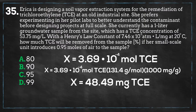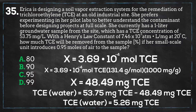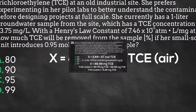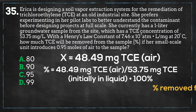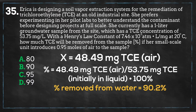In other words, if water containing 53.75 milligrams per liter of TCE were brought into equilibrium with 0.95 moles of air, the TCE concentration will reduce to 5.26 milligrams per liter. We take the ratio of TCE in the air to total TCE in the initial sample — 48.49 milligrams versus 53.75 milligrams — and we get 90.2% as the percentage of contamination removed from the water, which is answer B.